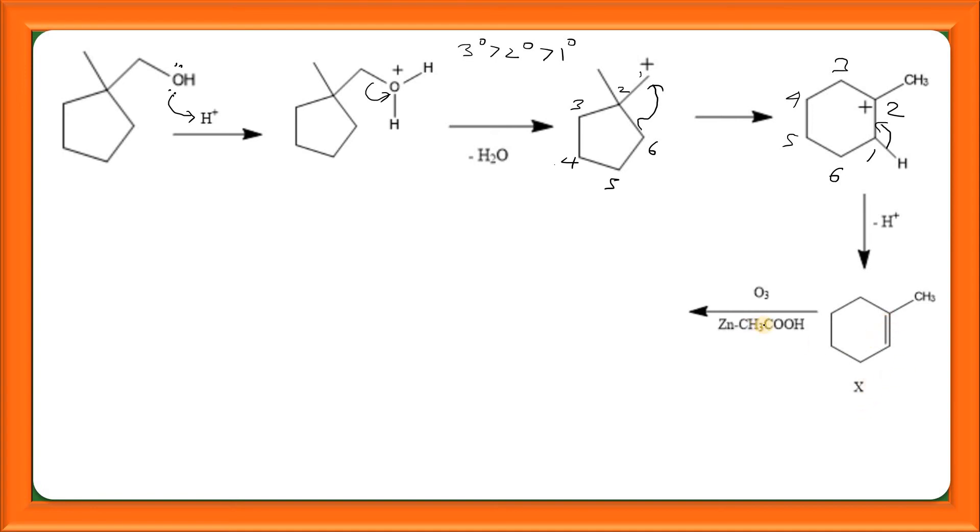This X further undergoes ozonolysis. Ozonolysis meh kya hota hai? Yeh alkene ka bond hai na, yeh break ho jata hai. Or, yaha pe ek oxygen aata hai, yaha pe ek oxygen aata hai. We get this product. That's our Y.